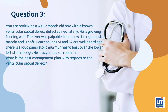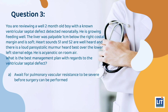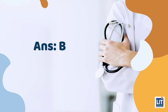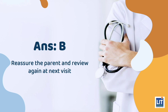Question 3: You are reviewing a well 2-month-old boy with a known ventricular septal defect detected neonatally. He is growing and feeding well. The liver is palpable 1cm below the right costal margin and is soft. Heart sounds S1 and S2 are well heard, and there is a loud pan-systolic murmur heard best over the lower left sternal edge. He is acyanotic on room air. What is the best management plan regarding the ventricular septal defect? The answer is B — reassure the parent and review again at the next visit.